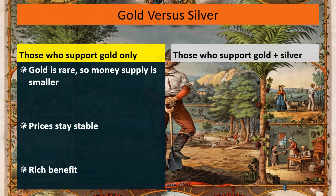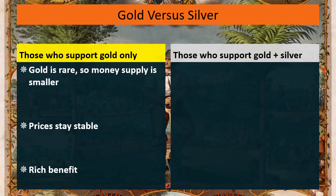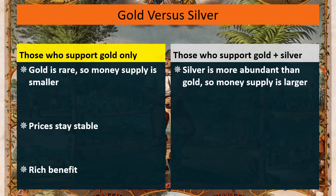Those who supported gold and silver — and even paper money backed by silver and gold — believed that because silver is more abundant, it would create a larger money supply. If there's more money, it's easier to get.